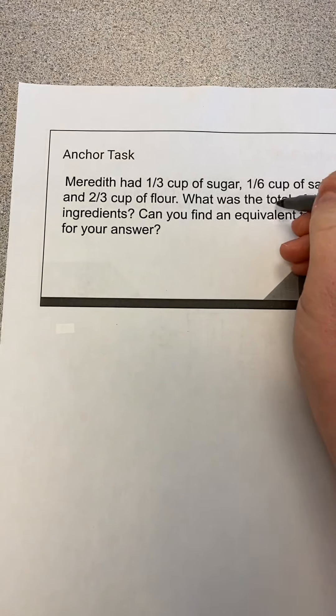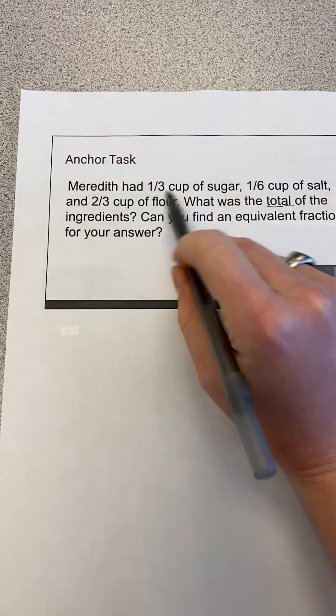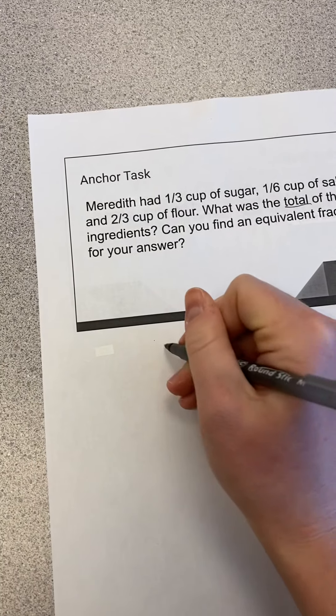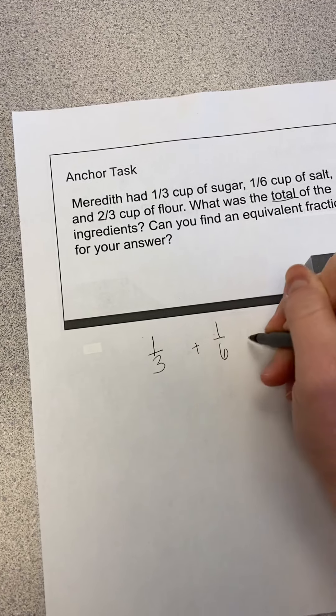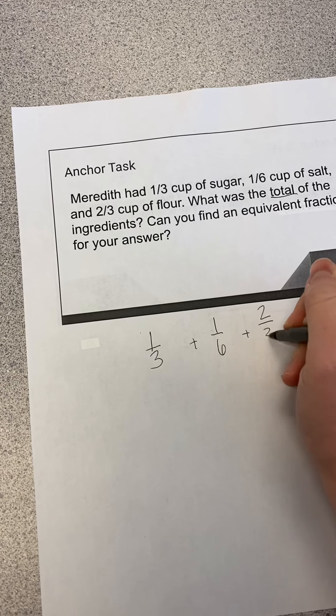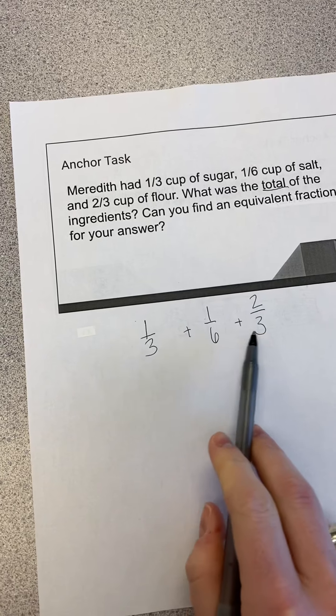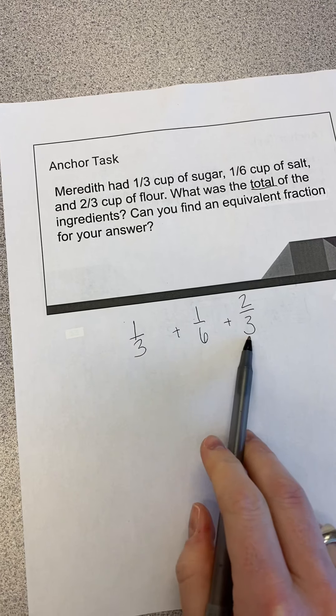So because they're asking me for the total, I need to add each of my fractions. So one-third plus one-sixth plus two-thirds. I need to find a common denominator since my denominators are not all the same.